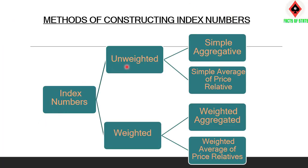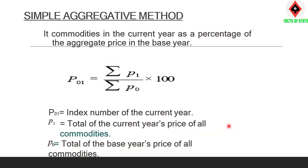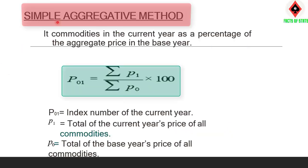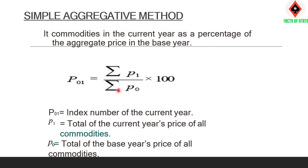Steps of constructing index numbers — Unweighted and Weighted. Unweighted includes: simple aggregative method and simple average of price relatives. Weighted includes: weighted aggregative and weighted average of price relatives. Simple aggregative method: it expresses the aggregate price of commodities in the current year as a percentage of the aggregate price in the base year. Formula: (Sigma P1 / Sigma P0) × 100, where P1 is price in current year and P0 is price in base year.